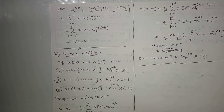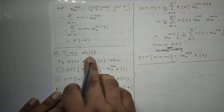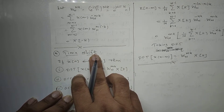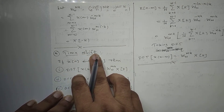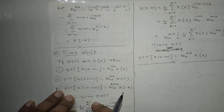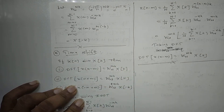Hello everyone. Last time we have seen the linearity property, periodicity property, and time reversal property. Now let us see property number four - the circular time shift property. All properties related with the DFT are circular shifting properties: circular time shift and circular frequency shift property.